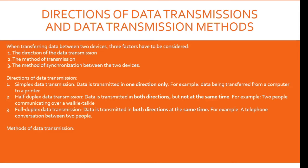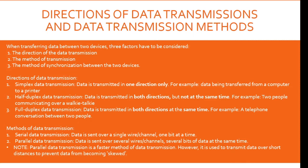Methods of data transmission. Number one, serial data transmission — data is sent over a single wire or channel, one bit at a time. Number two, parallel data transmission — data is sent over several wires or channels, transmitting several bits of data at the same time. Note: parallel data transmission is a faster method, however it is used to transmit data over short distances to prevent data from becoming skewed or mixed together.